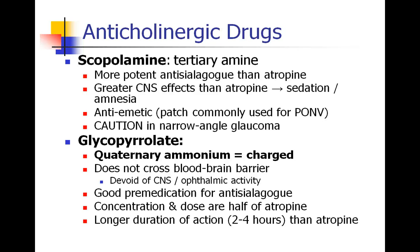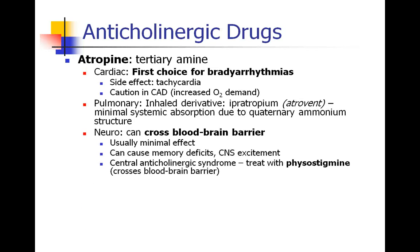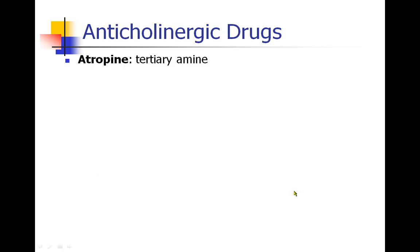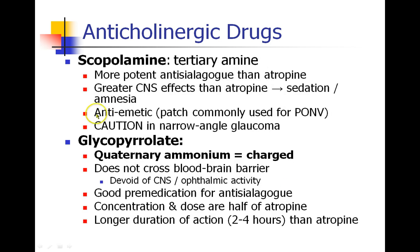Glycopyrrolate is probably the anticholinergic drug we're most familiar with. It is a quaternary ammonium compound — looking at its structure, the nitrogen has four bonds, giving it a positive charge. As a result, glycopyrrolate does not cross the blood-brain barrier and does not cause CNS or ophthalmologic side effects. It's still a very good anti-sialagogue and a great pre-medication to reduce secretions. It tends to have a slightly longer duration than atropine. Note that atropine is 0.4 mg/mL while glycopyrrolate is 0.2 mg/mL; however, the dosing is typically half as well, so practically you end up giving the same volume.